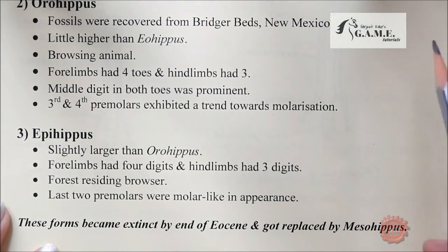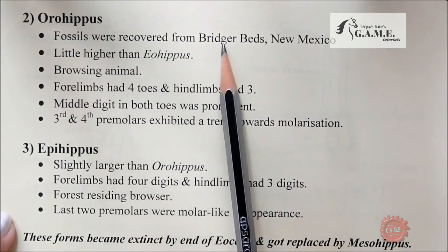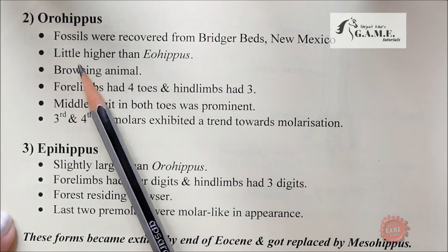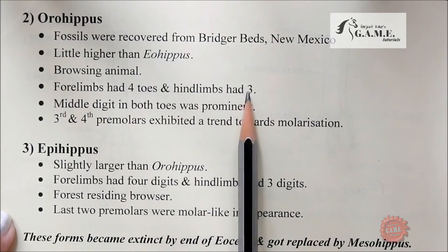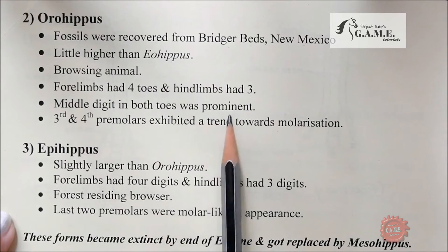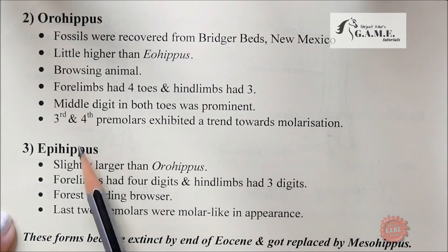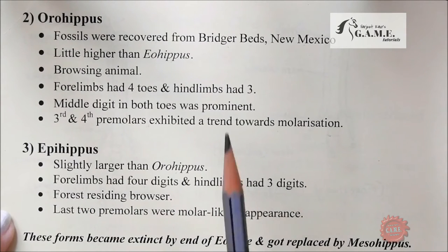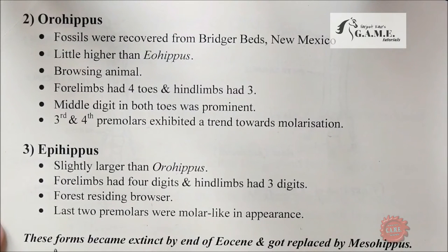Moving to Orohippus: its fossils were recovered from Richard Bad's New Mexico. Orohippus was slightly higher than Eohippus and was a browsing animal. Forelimbs had four toes and hind limbs had three. The middle digit in both was prominent, and the third and fourth premolars exhibited a trend towards molarization. Epihippus was slightly larger than Orohippus, with forelimbs having four digits and hind limbs three, a forest-dwelling browser, and the last two premolars were molar-like in appearance. These forms became extinct by the end of Eocene and were replaced by Mesohippus.